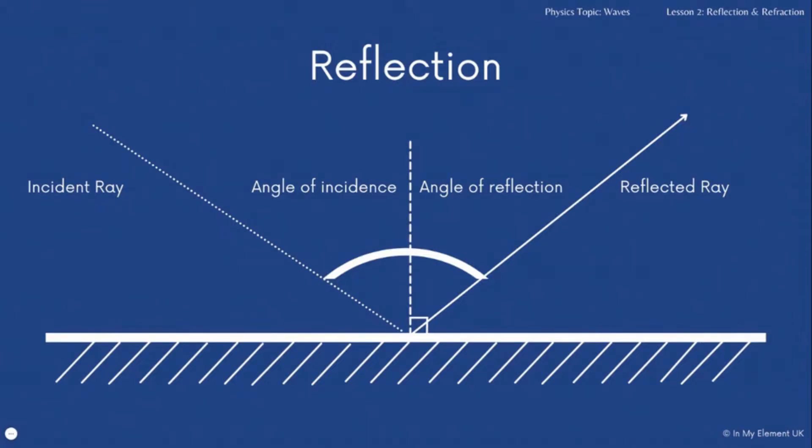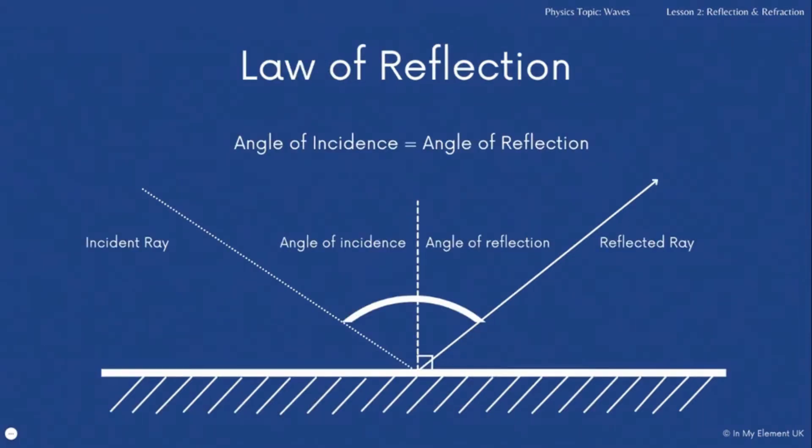Now both those rays have angles. One is known as the angle of incidence, and that's the angle at which the incident ray is at from the normal. The normal is the dashed line that's at a 90 degree angle to the mirror. And then the angle that the reflected ray comes off is known as the angle of reflection. So the law of reflection states that the angle of incidence will equal the angle of reflection.